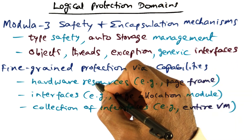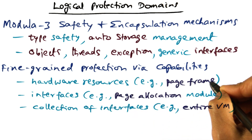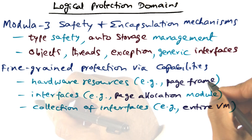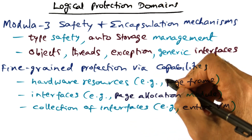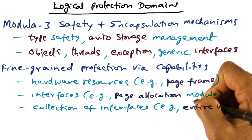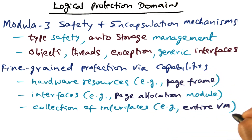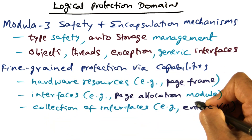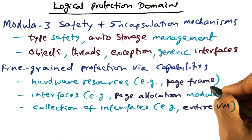You can think of individual hardware resources as fine-grained objects — for example, a page frame and what you can do with a particular page frame. You can have interfaces that provide a certain functionality as an object — for example, a page allocation module can be an object. You can also make a collection of interfaces into an object — for example, an entire virtual memory subsystem can be an object hierarchically composed of a list of page allocation modules, and within that you may have hardware resources defined as objects as well.